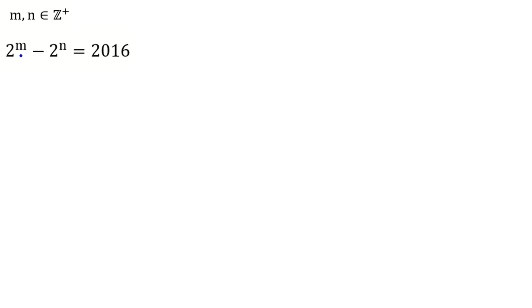So here we say 2 to the m, 2 to the n, which of them is greater? Because 2016 is greater than 0, we can conclude 2 to the m minus 2 to the n is greater than 0. If we add 2 to the n to both sides, 2 to the m is greater than 2 to the n. So we conclude m is greater than n.